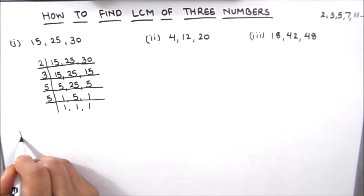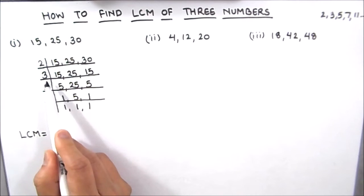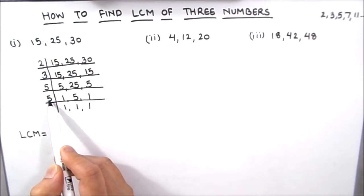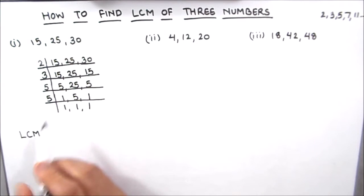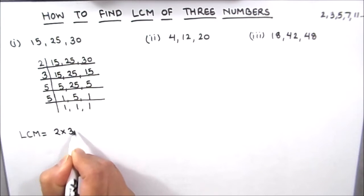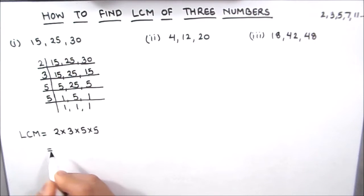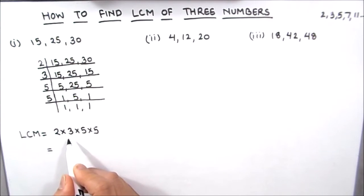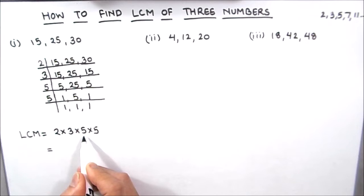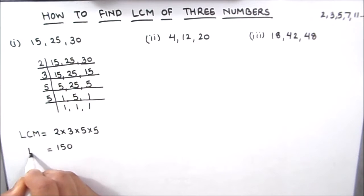To find the LCM of the three numbers, we are going to take the product of all the numbers which are on the left hand side of the ladder. So the LCM of the three numbers will be 2 times 3 times 5 times 5. So 2 times 3 is 6, 6 times 5 is 30 and 30 times 5 is 150. So the LCM of the three numbers is 150.